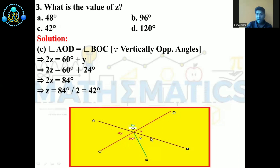So 2Z equals 60° plus Y. Since we know Y equals 24°, we get 60 plus 24 equals 84. Now finding Z: 84° divided by 2 gives 42°. So the correct answer is C.